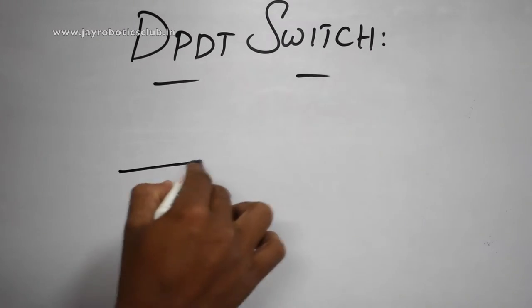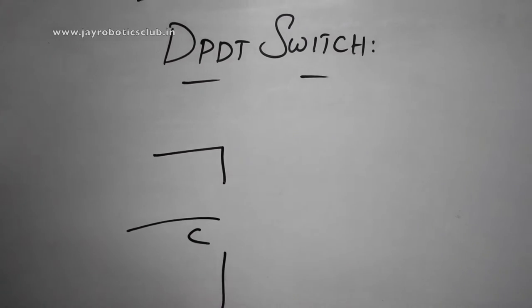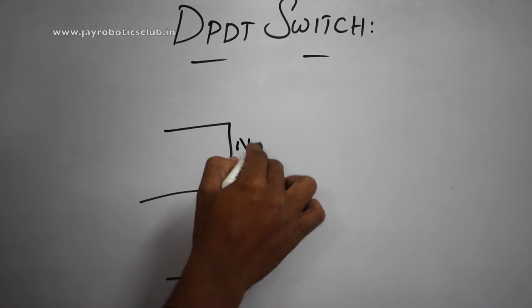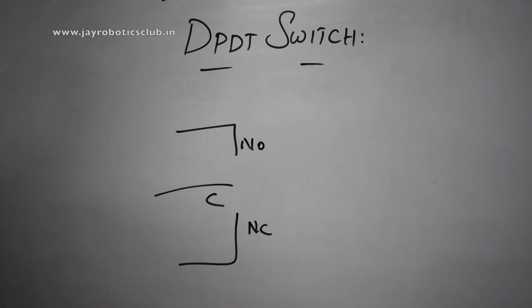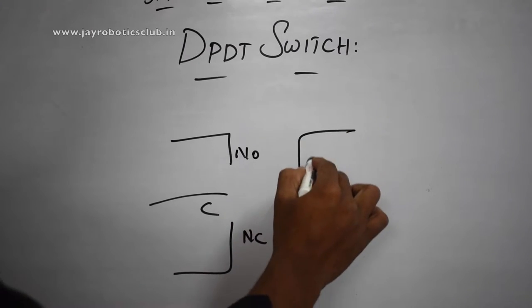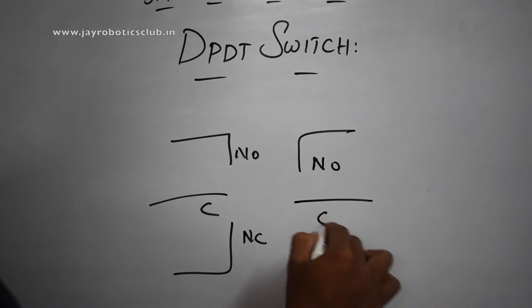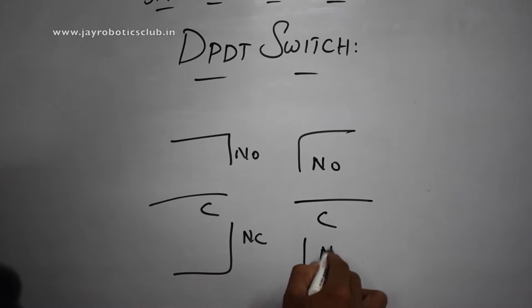Same way we have a normally open one, a normally closed one. On the other side you'll have the same thing: a common, normally open and normally closed.